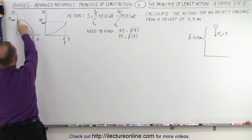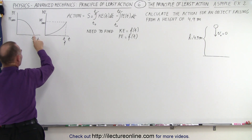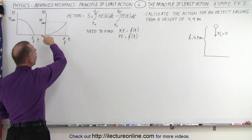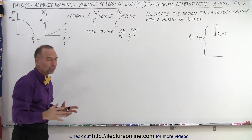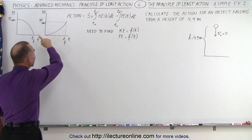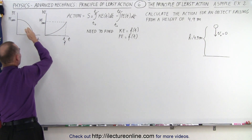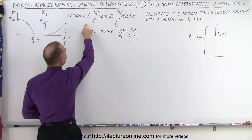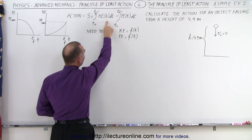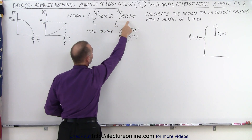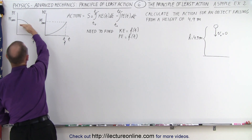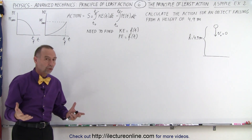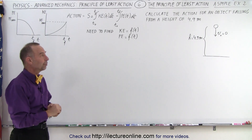We start with a maximum potential energy, and the potential energy will decrease to zero as it hits the ground, while the kinetic energy will increase. You can see the quadratic curve for the increase in kinetic energy and the quadratic curve for the decrease in potential energy. The action is the time-average kinetic energy minus the time-average potential energy, and the potential energy will be greater on average, so the difference should be a negative number.